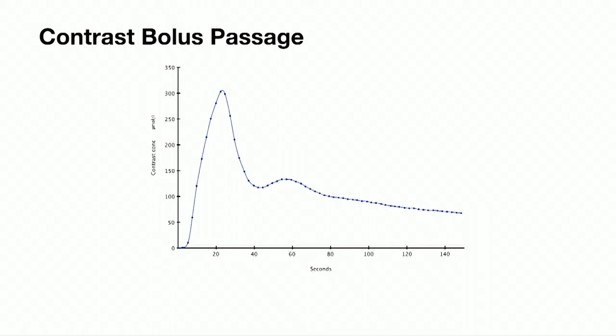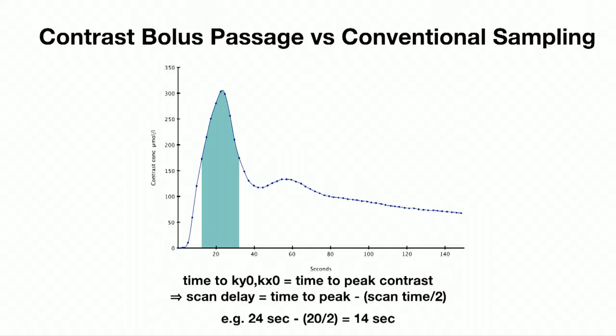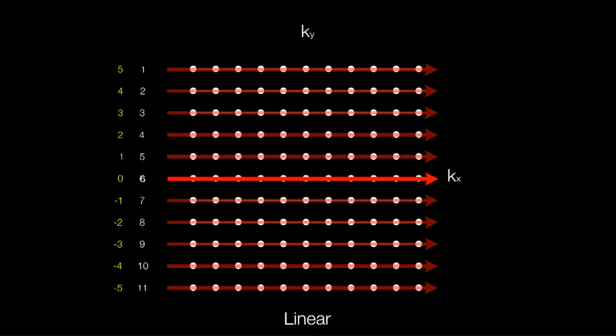In the early days with a bolus of contrast coming through the vasculature with an arterial peak, using conventional K-space encoding the centre fell here. When I started doing this in the late 90s/early 2000s, if our scan time was 20 seconds but our time to peak was 24 seconds, we'd have to start our scan at 14 seconds — meaning the first half of the scan was effectively wasted because there was no contrast affecting the ultimate image.